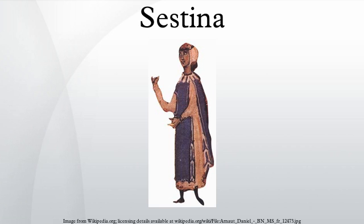Nevertheless, two other original troubadouric sestinas are known, the best known being Euras, pasve mon benestruc by Goelhempera Casalds de Calaus. There are also two contrafacta built on the same end words, the best known being Ben-Gran-Avelisa-intra by Bertrand de Bourne. These early sestinas were written in Old Occitan.